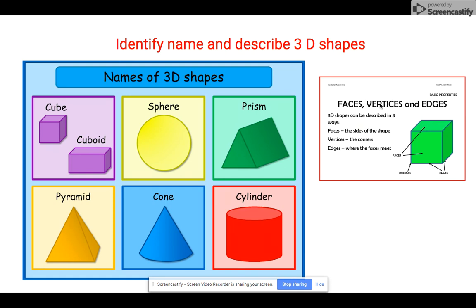As well as faces, we can use the words vertices and edges to also describe the 3D shape. We've just talked about the faces, which is the side of the shape, and the vertices, or another word for saying the corners. So you can count up how many corners the shape has.